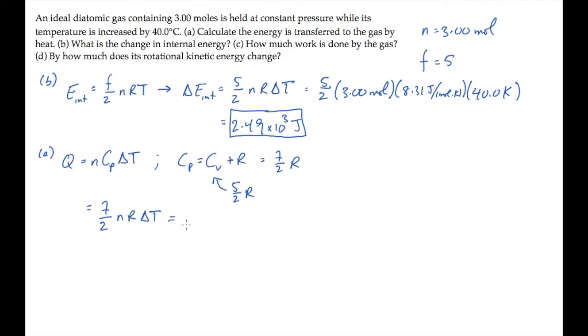and either calculate again or realize that this is 7/5 the value that we had before. Either way, it works out to 3.49 times 10 to the third joules.